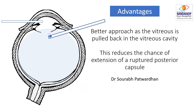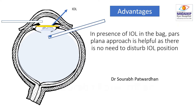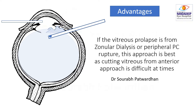Because if you are cutting the vitreous from the anterior side, it may prolapse more and cause extension of the PC ruptured area. Also, when there is presence of an IOL in the bag, the parsplana approach is helpful because there is no need to disturb the IOL which is already in position, and you can go from behind through the parsplana route and remove all the vitreous.